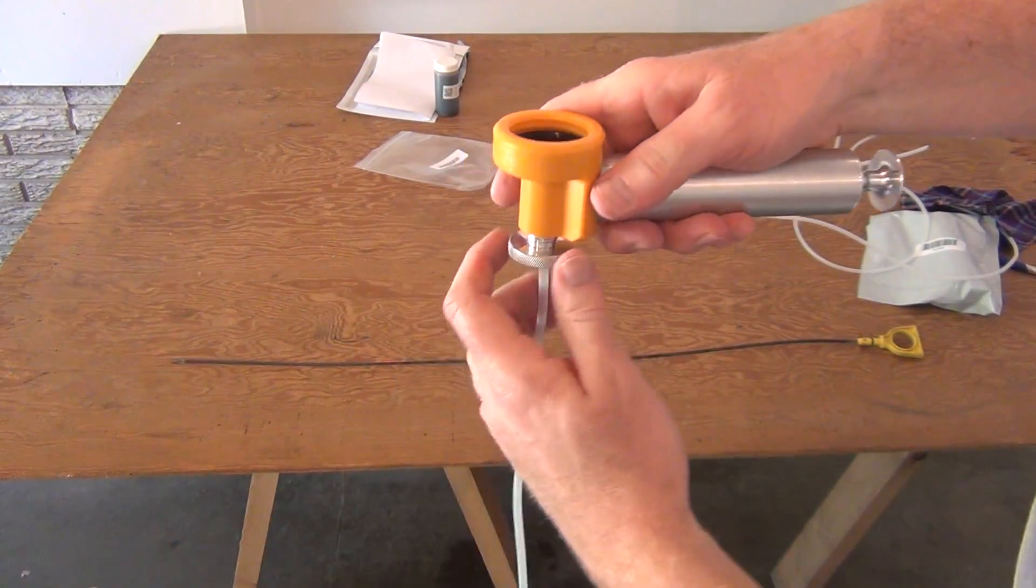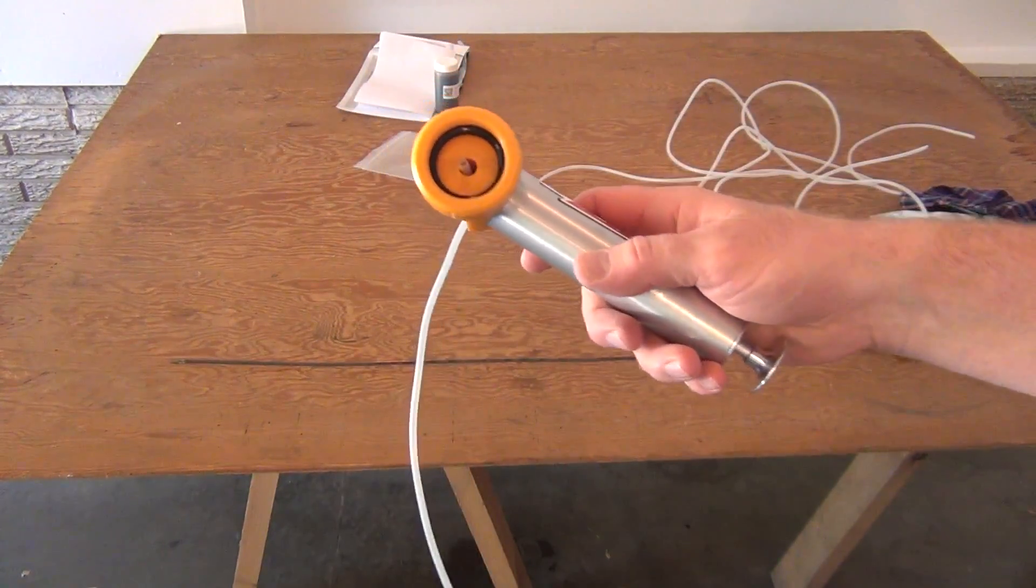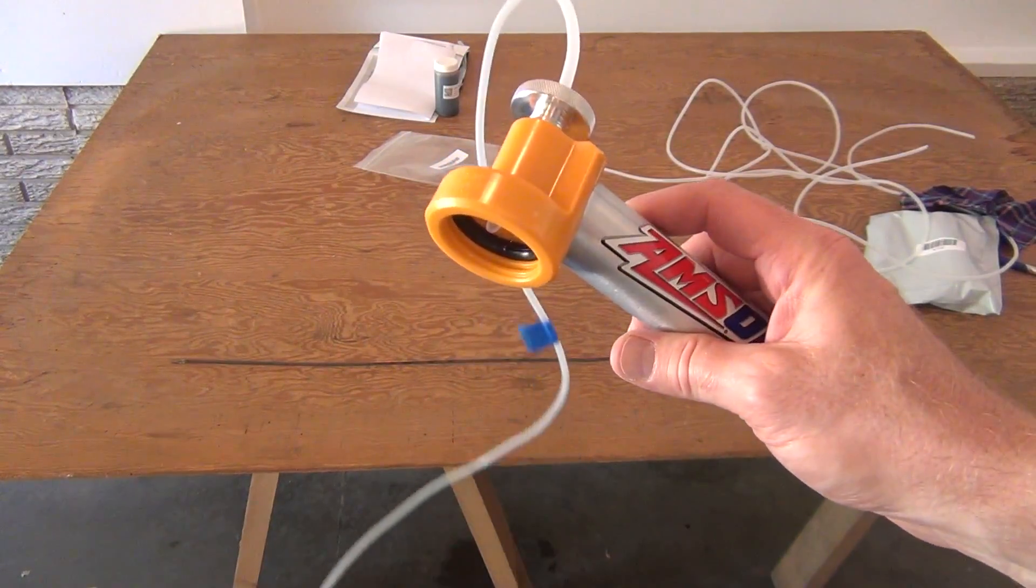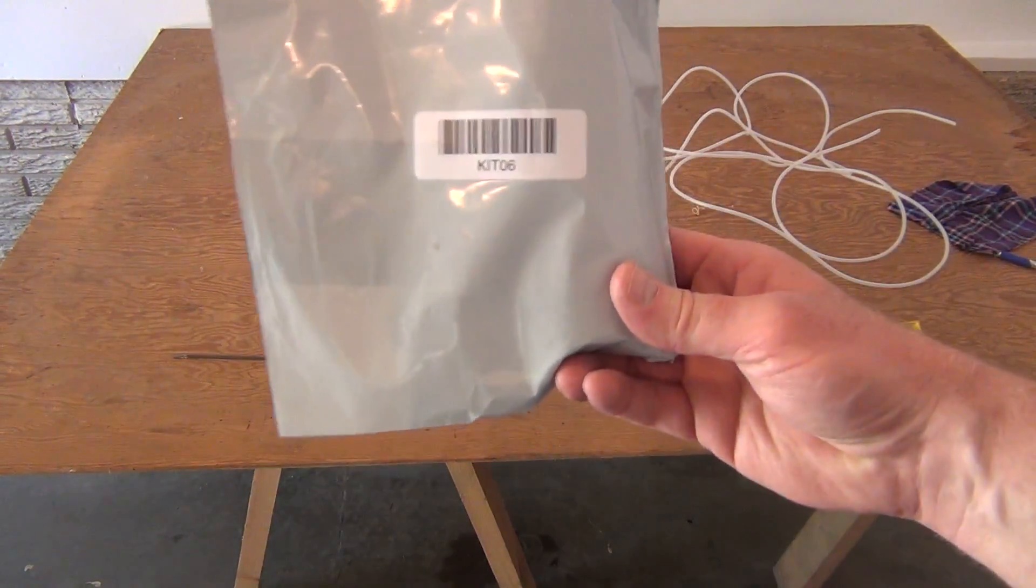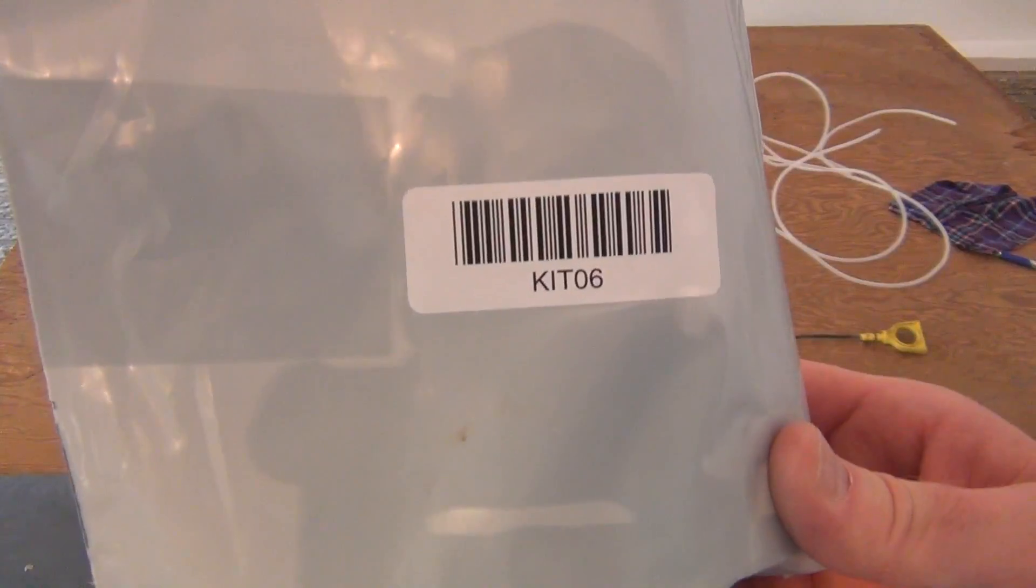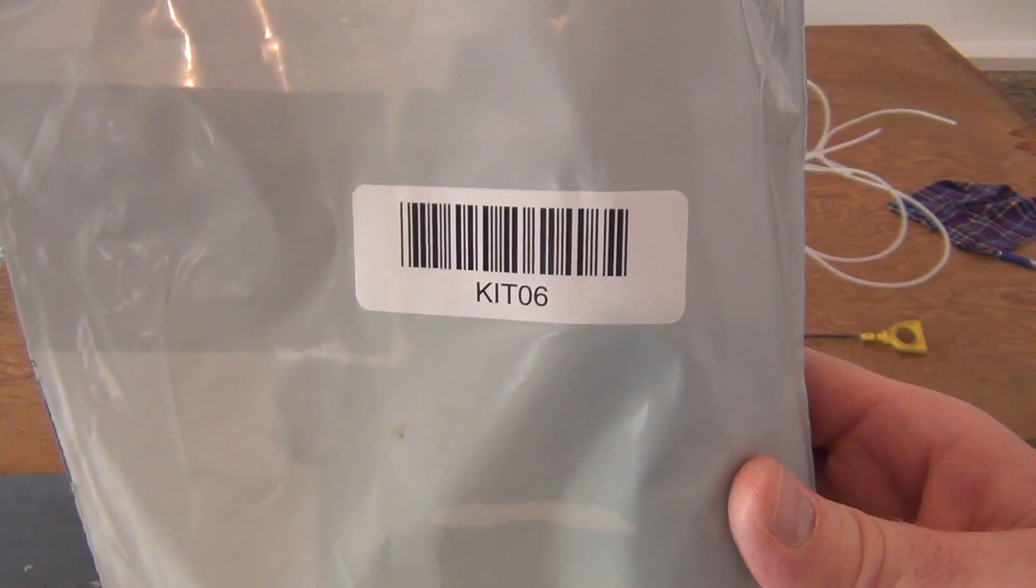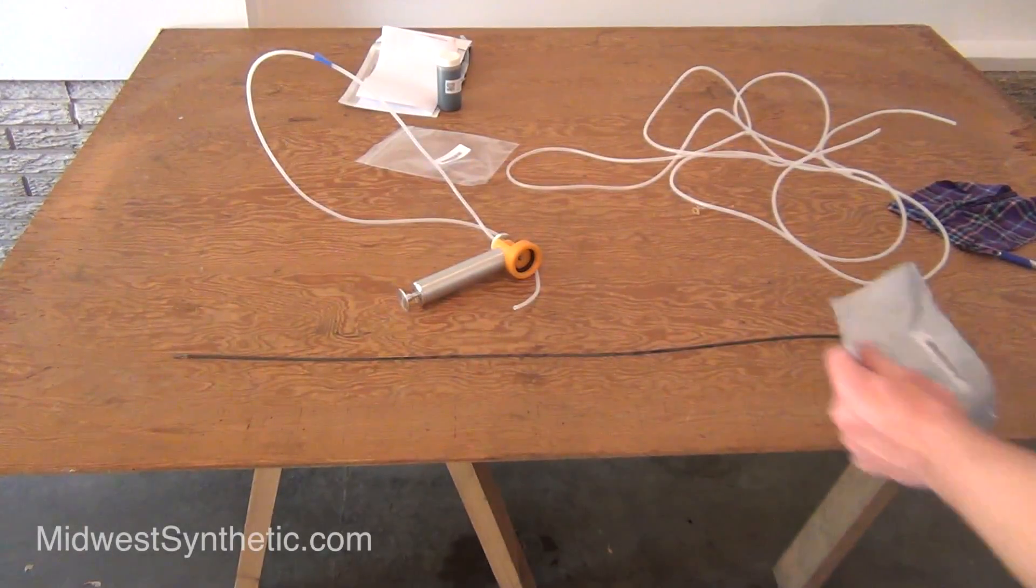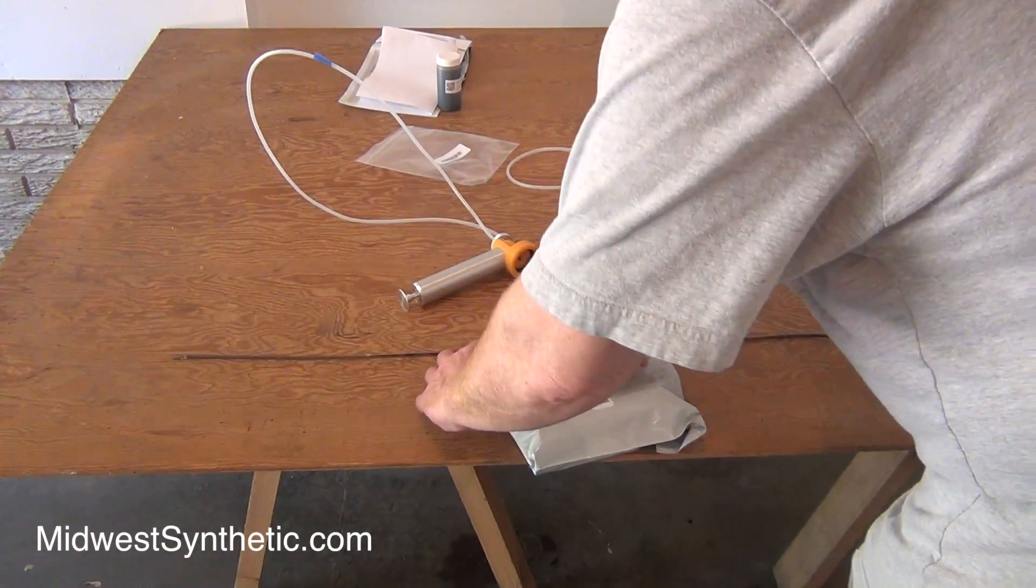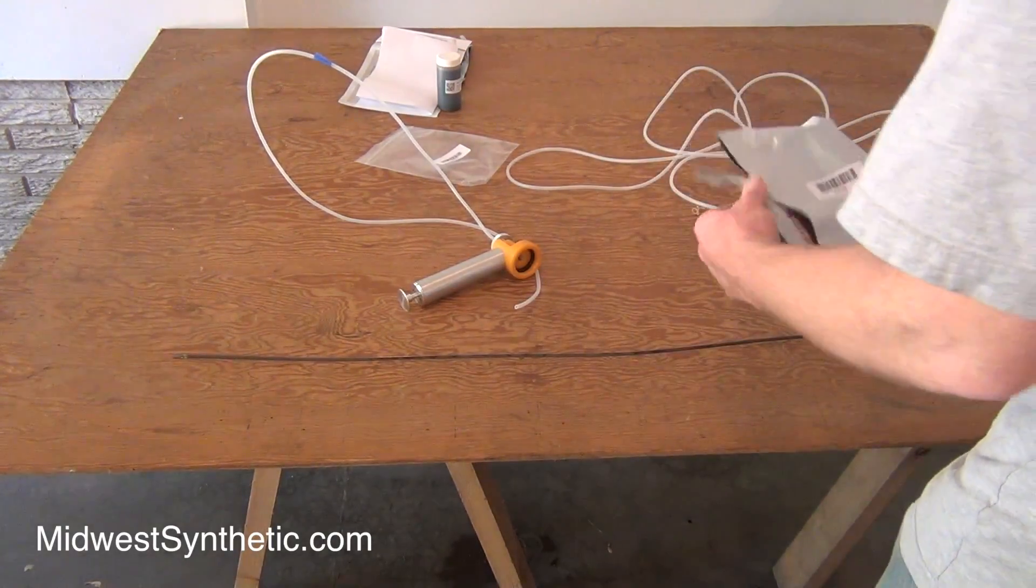Attach the hose to the pump. This is a kit 6. The oil analysis kit comes with a sample bottle, data form, sealable envelope, and instructions.